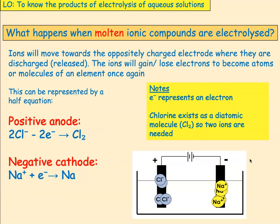Ions will move towards the oppositely charged electrode when they are discharged or released. The ions will either gain or lose electrons to become atoms or molecules of an element once again. This can be represented with a half equation. You don't need to worry about half equations if you're doing foundation, but if you're doing the higher tier you do need to write them. For sodium chloride: chlorine is made at the positive anode — 2Cl⁻ minus 2 electrons gives Cl₂, or written as 2Cl⁻ → Cl₂ + 2e⁻. At the negative cathode: Na⁺ + e⁻ → Na metal.